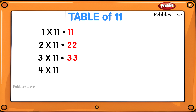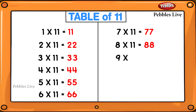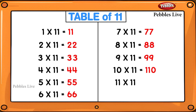1 eleven is 11, 2 elevens are 22, 3 elevens are 33, 4 elevens are 44, 5 elevens are 55, 6 elevens are 66, 7 elevens are 77, 8 elevens are 88, 9 elevens are 99, 10 elevens are 110, 11 elevens are 121, 12 elevens are 132.